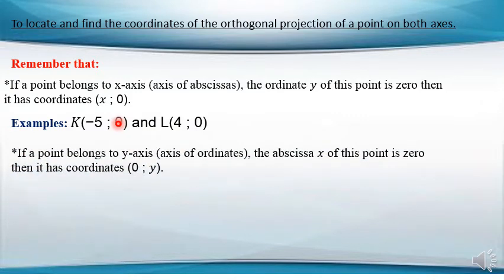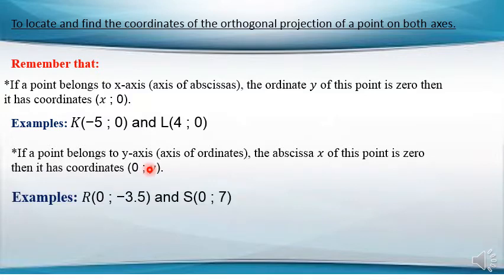And vice versa: if a point belongs to the y-axis, or the axis of ordinates, then the abscissa x of this point is 0. For example, R(0, -3.5) and S(0, 7). These two points have abscissa x equal to 0, so they are located on the y-axis.